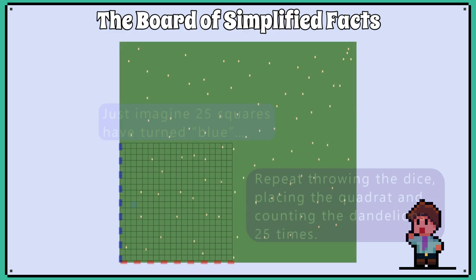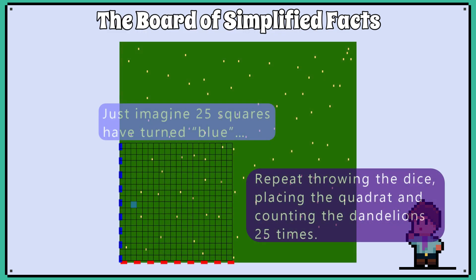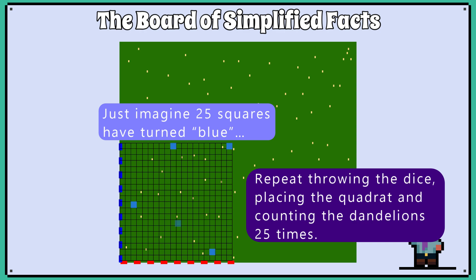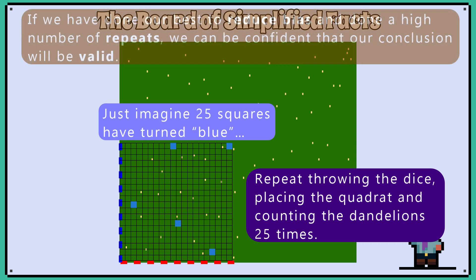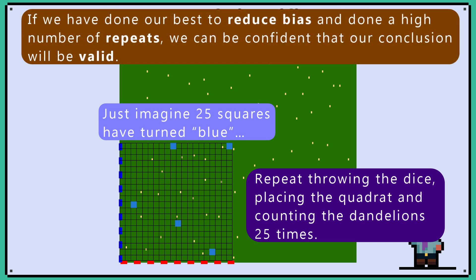We should repeat this as many times as possible, and we will do it 25 times. This is to increase our confidence in our data and that our estimates are close to the true value. If we have done our best to reduce bias and done a high number of samplings, we can be confident that our conclusion will be valid.